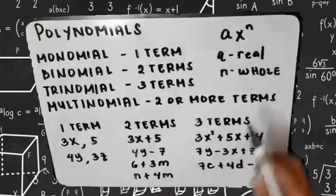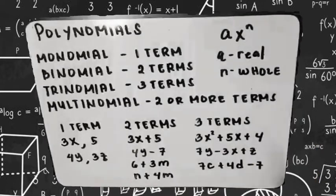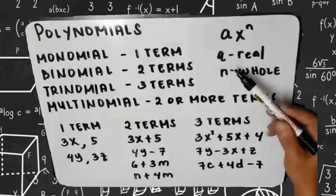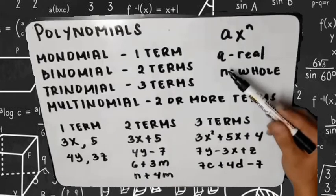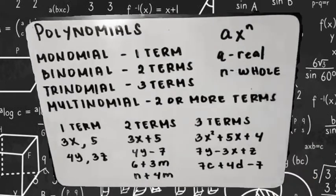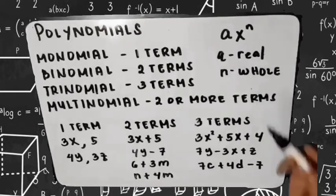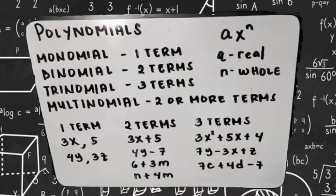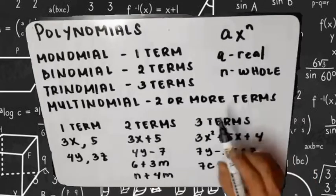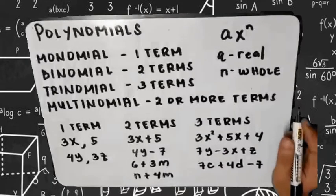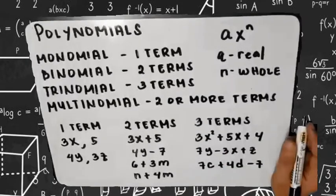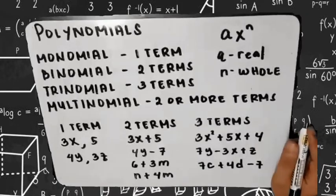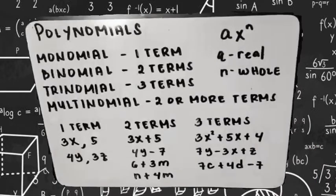For the variable a, it can be a fraction, decimal, or integer. For the whole number exponent n, not all integers are allowed — only positive numbers, including 0.